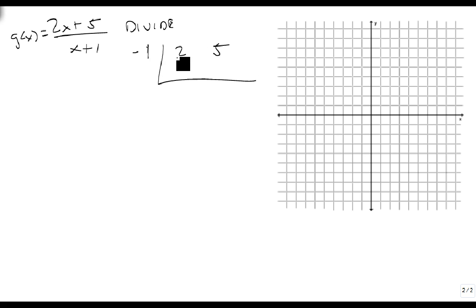Because what I want is to see this as 2 plus 3 over x plus 1. So the 2 actually gives me my vertical shift, and the 3 is going to behave like the 3 did on the last problem.